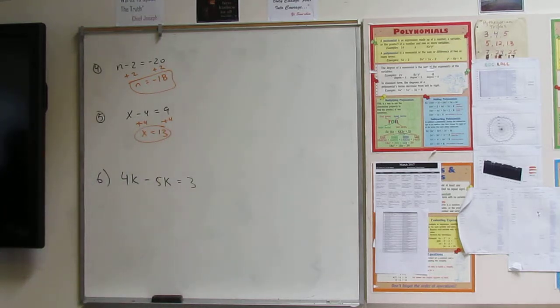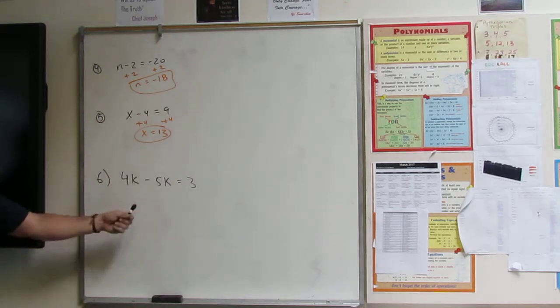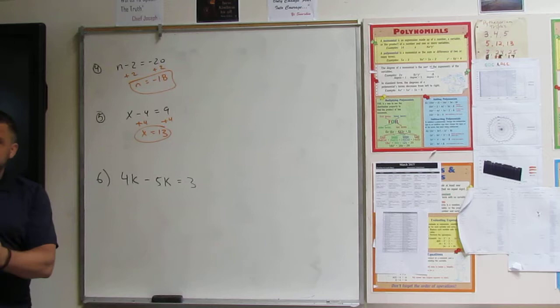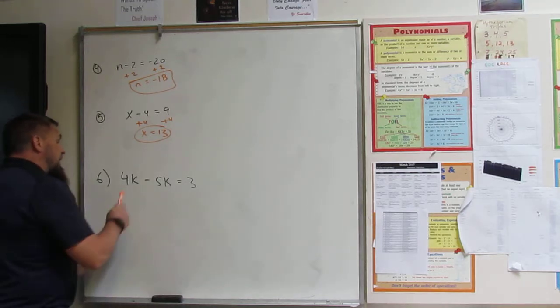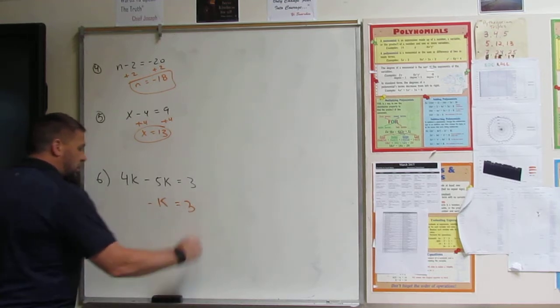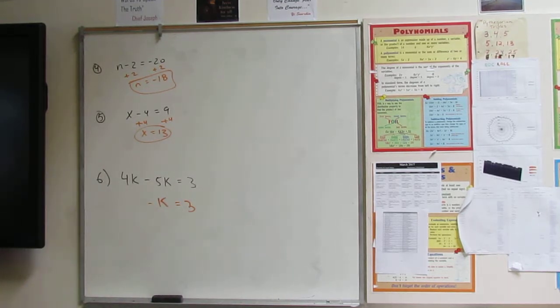But what happens when we have two k's here? I got four k minus five k. Can I combine those? Are those like terms? Yeah. So then I say, okay, what is four k minus five k? Right? Oh, my bad.